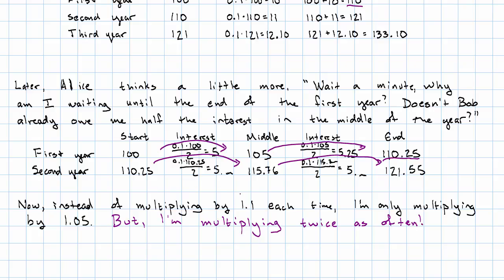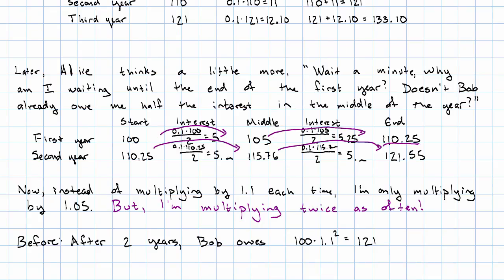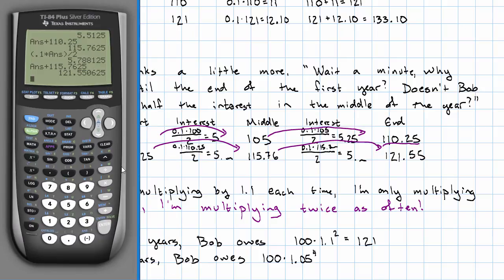So instead of at the end of two years, Bob owes 100 times 1.1 to the second, Bob owes 100 times 1.05 to the fourth power. That's how I would get that decimal that I had.